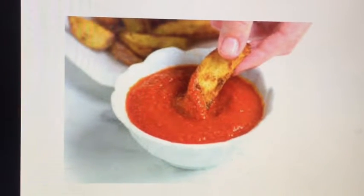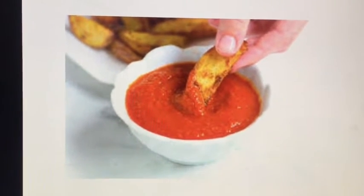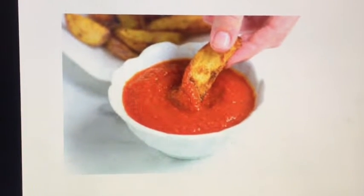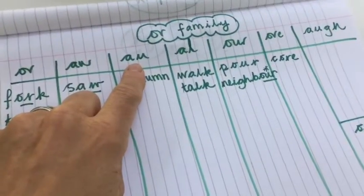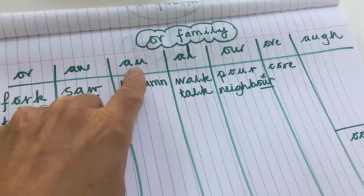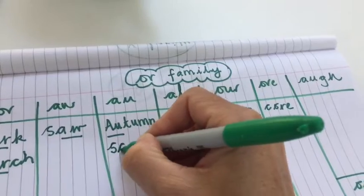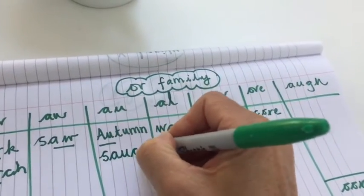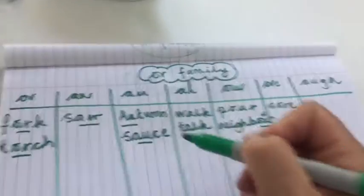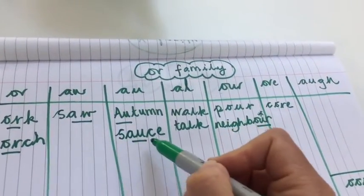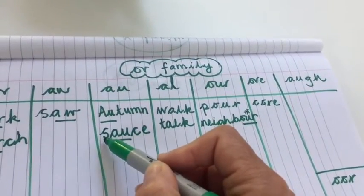Somebody is dipping their chip in some sauce — s-au-ce. Sauce is quite a tricky word. It's going to go in this column — it's the 'au' diagraph making the 'or' sound, so we write s-au-ce, sauce. The reason it's tricky is because there are two 's' sounds in sauce — one at the beginning and one at the end.